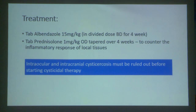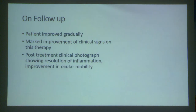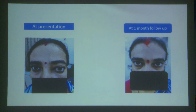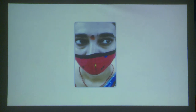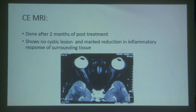CT of brain and orbit showed a bulky left medial rectus muscle containing a small cystic lesion with surrounding inflammatory changes, possibility of myocysticercosis. CT brain did not reveal anything significant. Diagnosis was cystic cysticercosis of the left medial rectus muscle. We gave oral albendazole 15 mg/kg body weight in divided doses BD for four weeks and tapering prednisolone 1 mg/kg body weight OD tapered over four weeks. After one week post-treatment, patient returned with massive chemosis, periorbital swelling and severe restriction in ocular movement due to toxins released by the dying cyst.